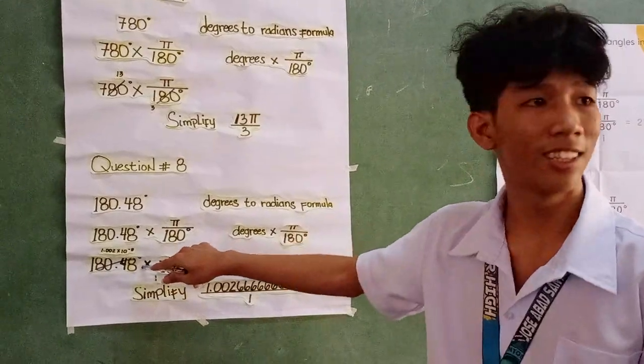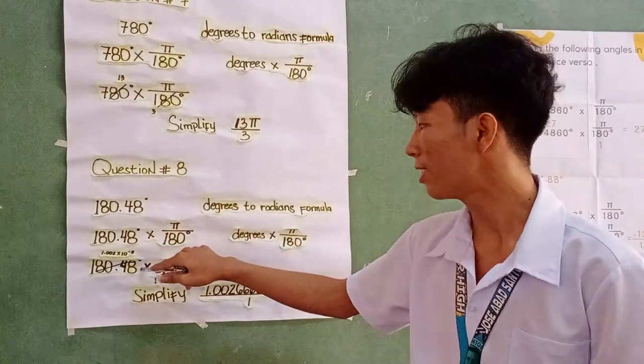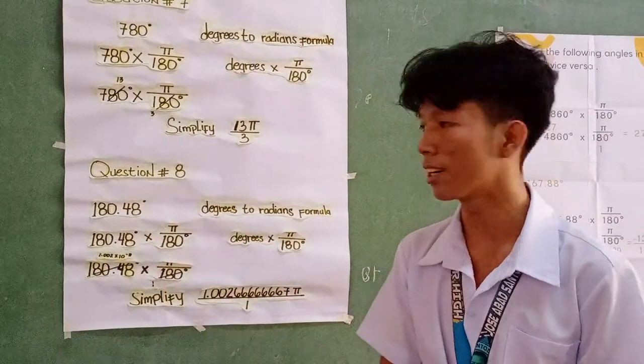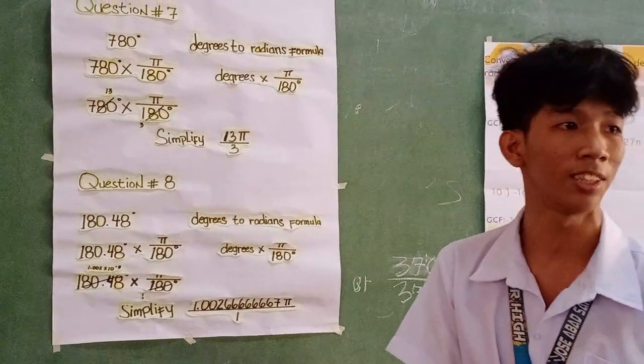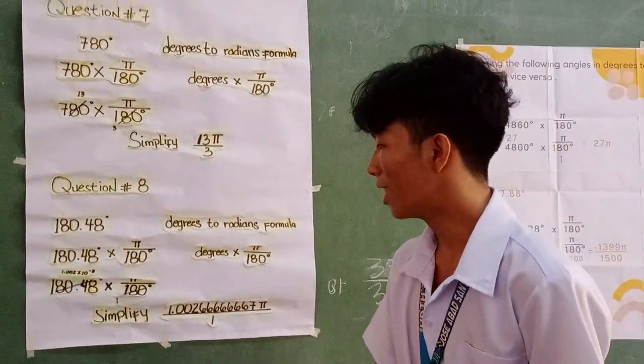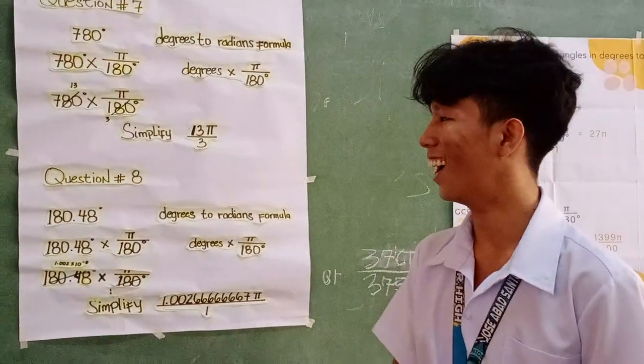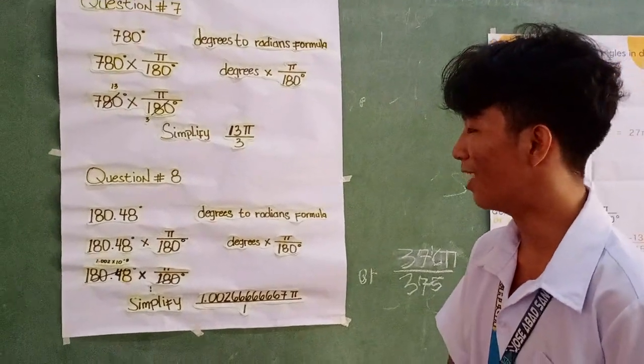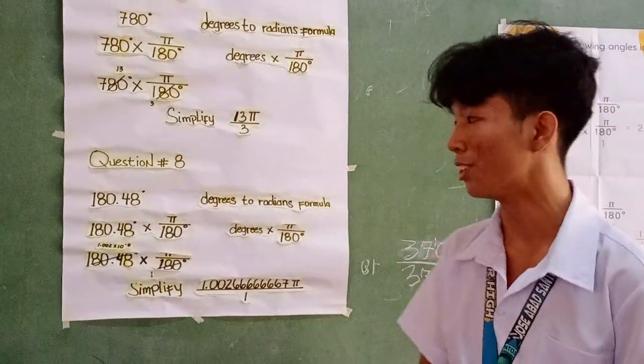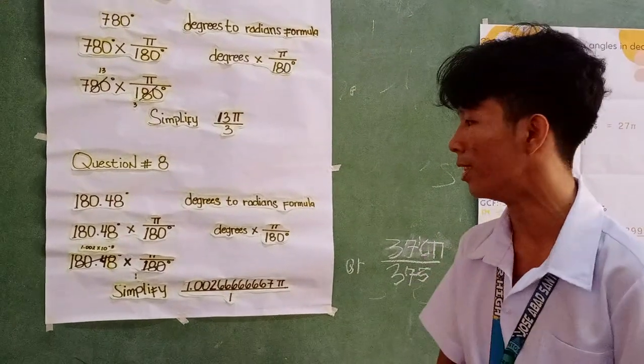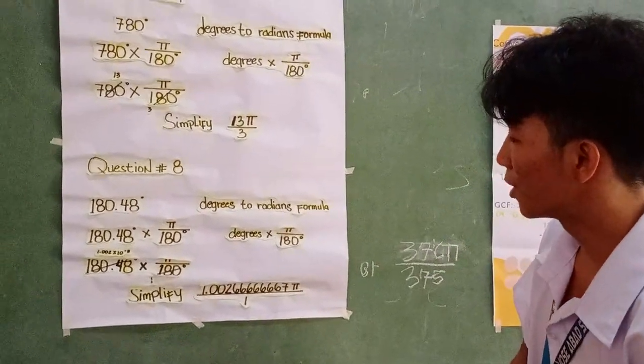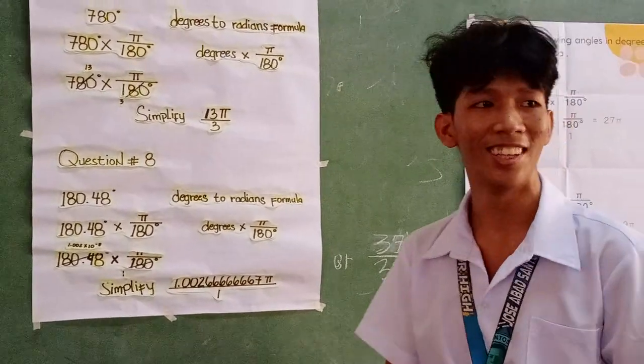We divide 180.48 by itself... actually, 180.48 divided by 180 is 1.0026, then 7.006... then times pi over 180 degrees.